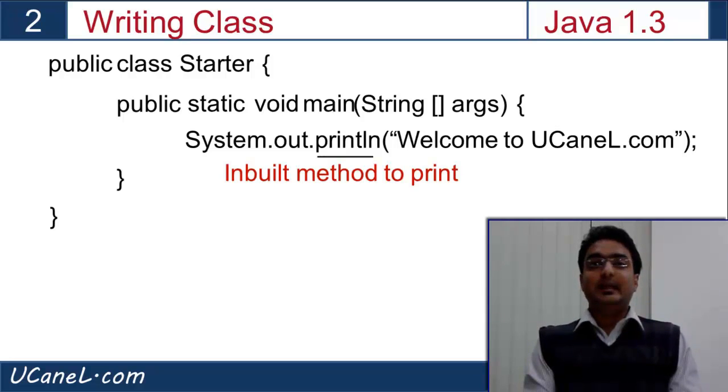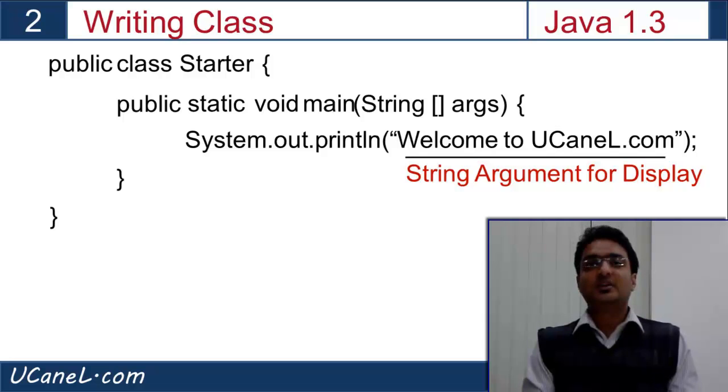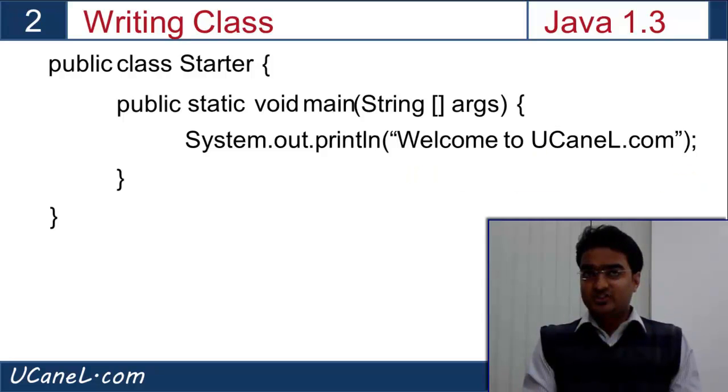Println is an inbuilt function, that is, it is already designed and stored in Java, so we can use it. It takes an argument as the string that you want to display. This string has to be in double quotes. Out represents the output screen, as we are accessing the output device, that is our screen to display. And System represents our console. All statements should end with a semicolon, and so we put a semicolon at the end.